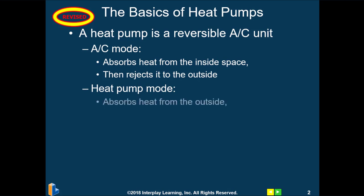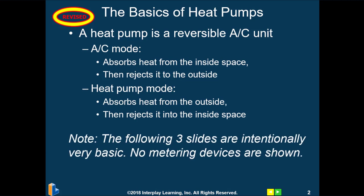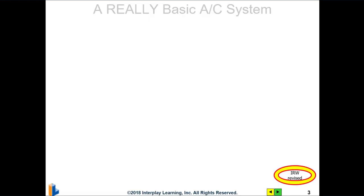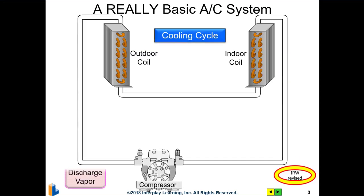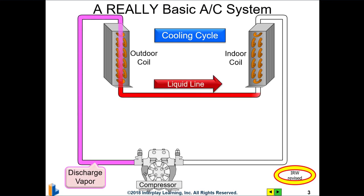In heating mode, they add something called the four-way reversing valve, which causes the discharge gas coming out of the compressor to be routed to the indoor coil. This causes the indoor coil to now function as the condenser and reject heat into the space, while heat is absorbed outside. In a basic air conditioning system, the outdoor coil is the condenser. The liquid refrigerant is fed through a metering device to the indoor coil, where it boils and absorbs heat from the inside space, and that heat is rejected in the outdoor coil.